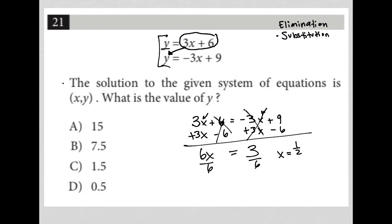But because the question is not asking for x, I'd have to then go back to my original equation. It doesn't matter which one you choose. I'm going to choose the first one because I don't want to deal with the negative sign there. That means that y is equal to 3 times 1 half plus 6. 3 times 1 half is 1 and 1 half. I'll just call that 1.5 plus 6. Therefore, y is equal to 7.5. And therefore, the answer is choice B. So, you see how I got there.